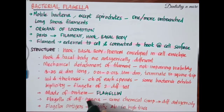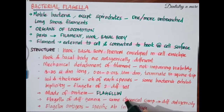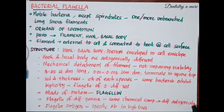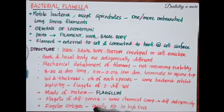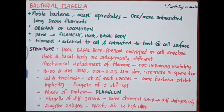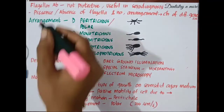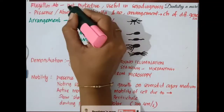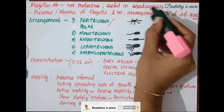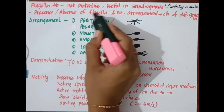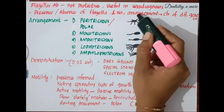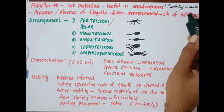The flagella of different genera have the same chemical composition but differ in antigenicity. The flagellar antigens produce very specific antibodies in high titers. The flagellar antibodies are not protective but are useful in serodiagnosis. The presence or absence of flagella, their number, and their arrangement are characteristics of different genera.